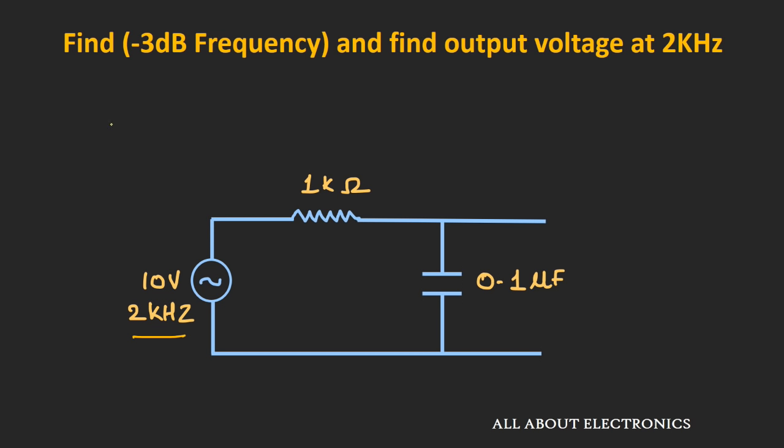These higher-order filters can be designed by cascading first-order low-pass filters. For a second-order low-pass filter using two cascaded first-order filters with cutoff frequencies fc1 and fc2, the overall cutoff frequency is 1 / (2π × √(R1C1 × R2C2)). If R1 = R2 and C1 = C2, the cutoff frequency simplifies to 1 / (2π × R1 × C1).